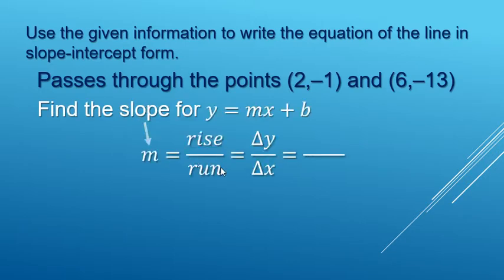Slope is rise over run, or change in y's over change in x's. So change in y's, let's look at that. Negative 1 to negative 13, that's going to be a down 12, and you can use subtraction if you want to. As far as change in x's go, let's look at those. That's going to be from 2 to 6, that's over 4.